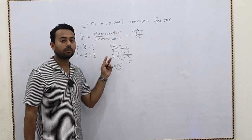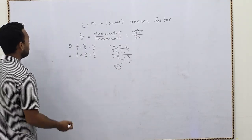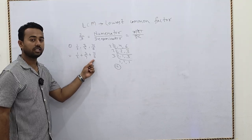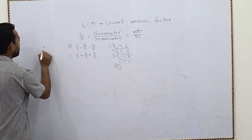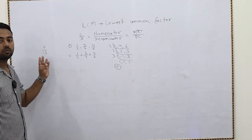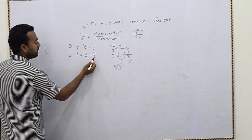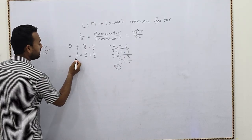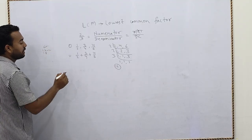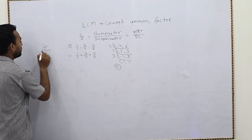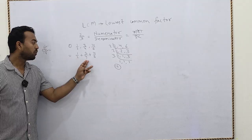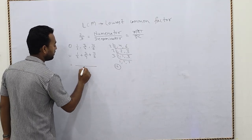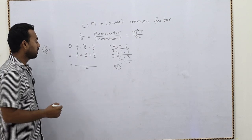Now here is how we find the LCM using the new method. We look at the denominators — 2, 4, 6 — and identify the greatest one, which is 6. We write the table of 6: 6, 12, 18. We only need up to about four or five terms. We check which number in the table of 6 is also divisible by 4 and 2. We find that 12 works — so the LCM of 2, 4, and 6 is 12, found in a very short time.